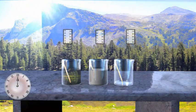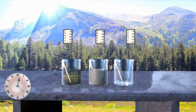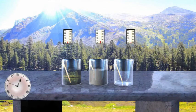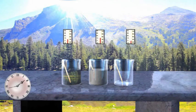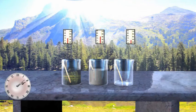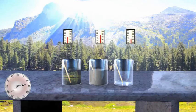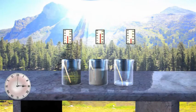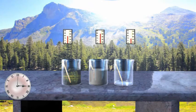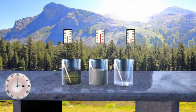We see from the readings on the thermometer that the temperature is highest in the second beaker. This shows that soil gets heated faster than water and air.